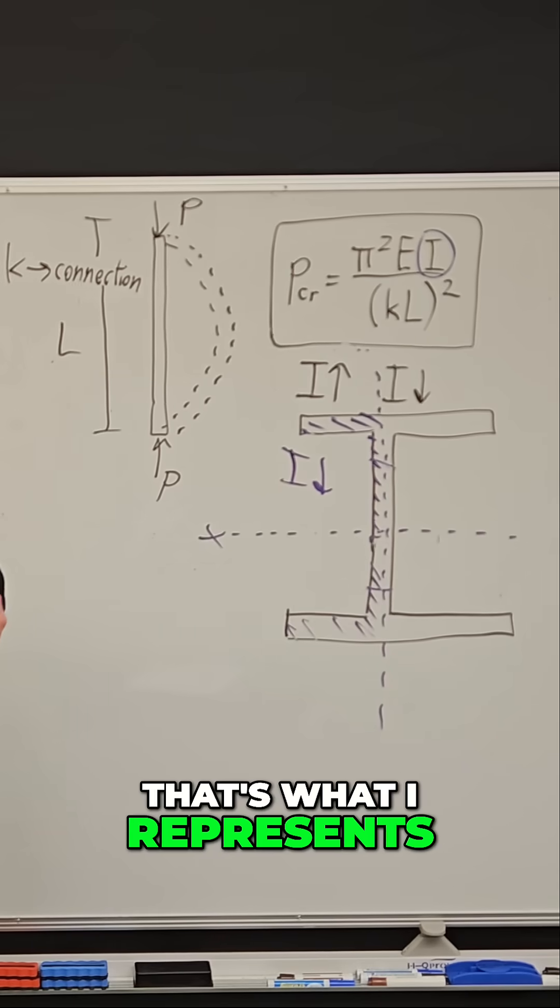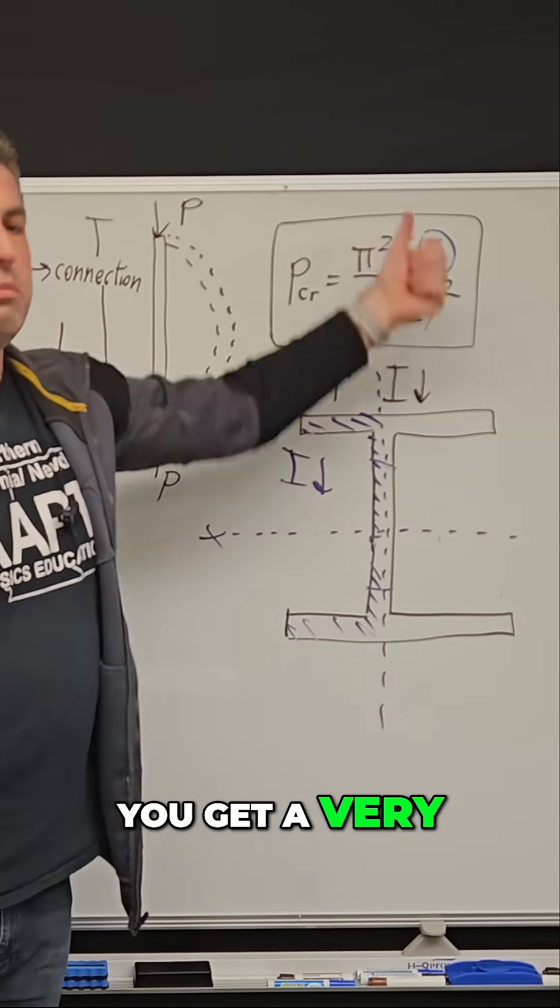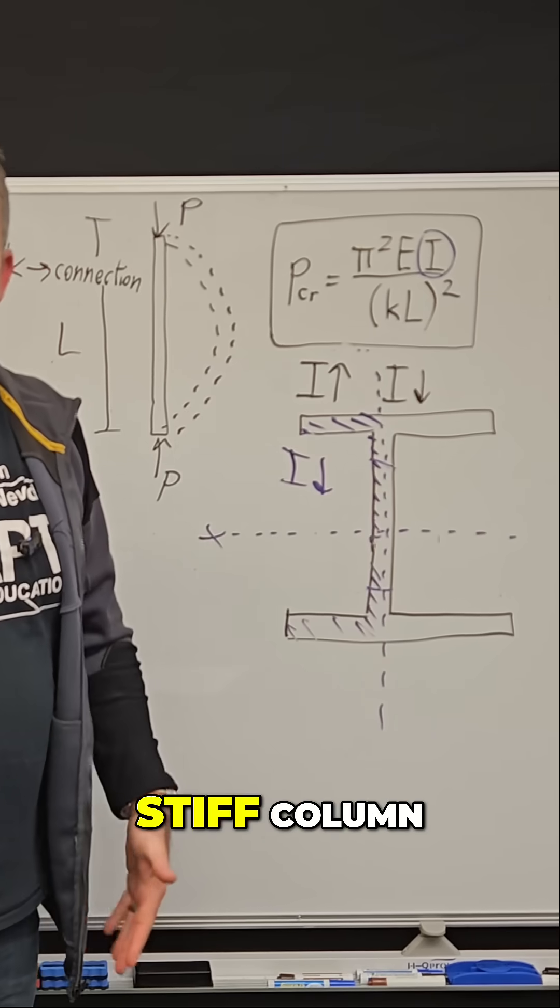So that's what I represents. And basically, if the area is pushed far from the central axis, you get a very big I, which means a very stiff column.